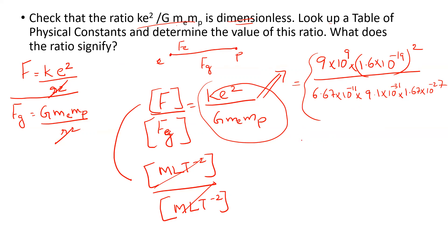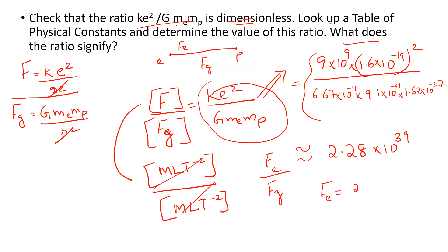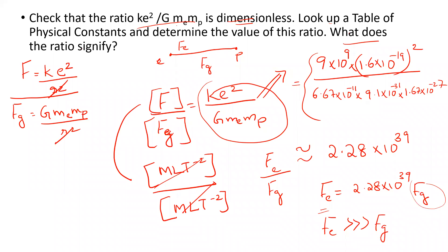Calculating the ratio gives 2.28 × 10³⁹. This means electrostatic force is equal to 2.28 × 10³⁹ times the gravitational force, meaning electrostatic force is much, much bigger than gravitational force. Gravitational force is the weakest force in nature.